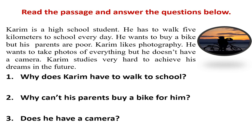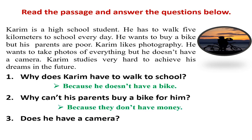Let's answer these questions. Number one: why does Karim have to walk to school? It's because he doesn't have a bike. Number two: why can't his parents buy a bike for him? Because they are poor — they don't have money. Number three: does he have a camera? No, he doesn't.